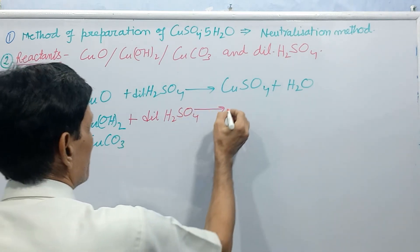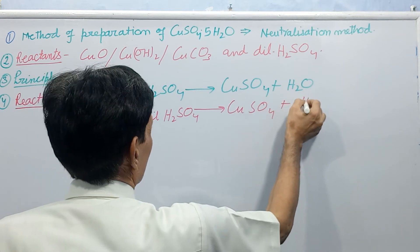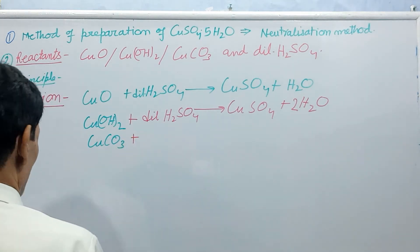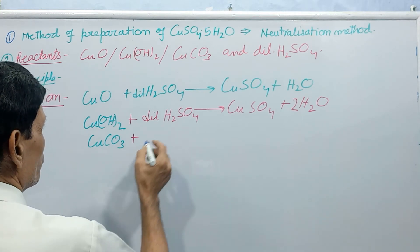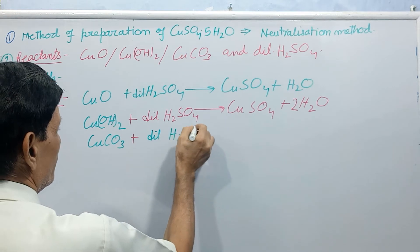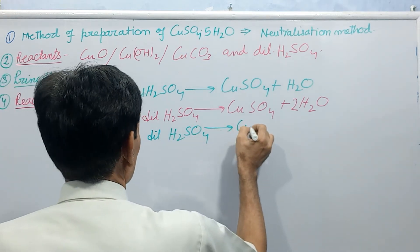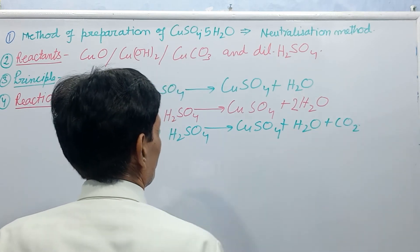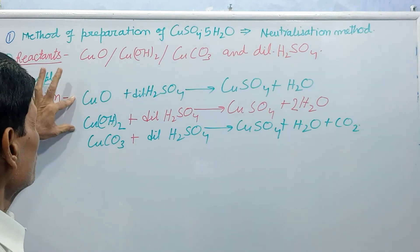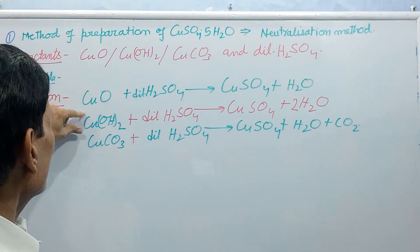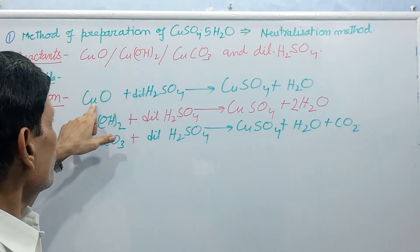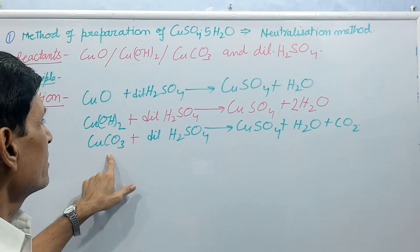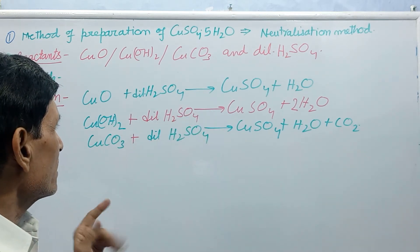Now, here next one, copper carbonate CuCO3 plus H2SO4 gives CuSO4 plus H2O plus CO2. These two, copper oxide, copper hydroxide are insoluble base. The method is by reaction of insoluble base and dilute sulphuric acid. And here, decomposition of copper carbonate by action of dilute sulphuric acid.